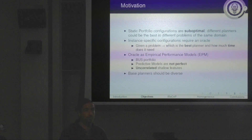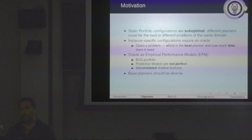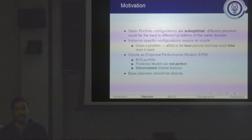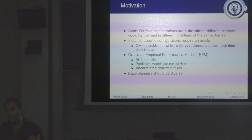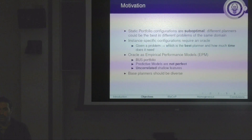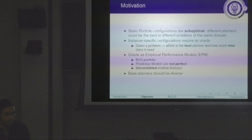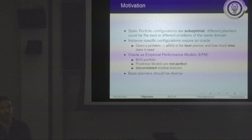To make an instance-specific configuration, we need an oracle that tells us which is the best planner for a specific problem in a specific domain. The most similar thing we have to an oracle is empirical performance models — the idea being that we define predictive models that tell us which planners are considered best for such problems. The problem is that predictive models are not perfect; sometimes there are uncorrelated shallow features, and we should ensure that the portfolio has a diverse set of planners.